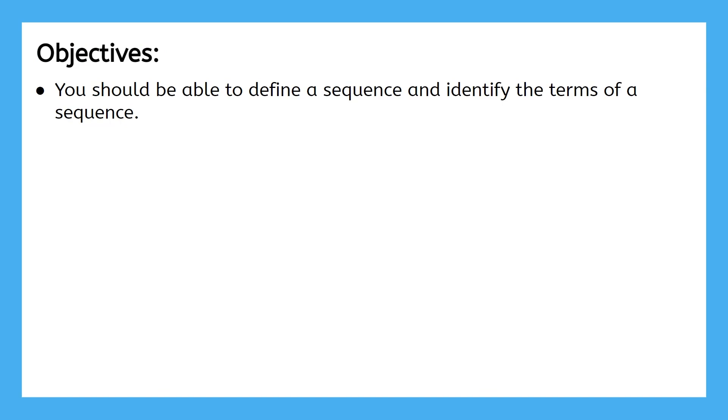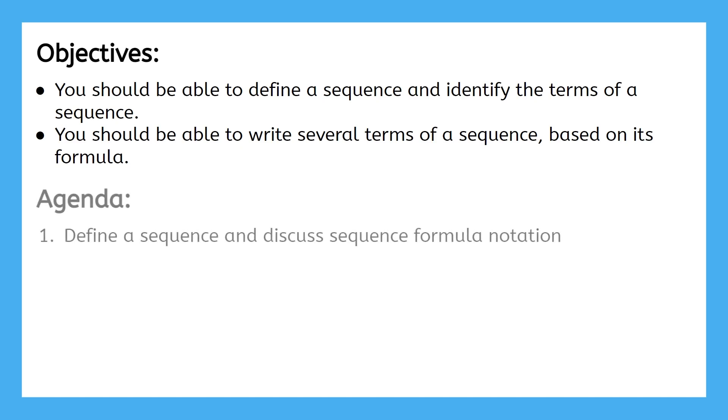By the end of this lesson, you should be able to define a sequence and identify the terms of a sequence. You should also be able to write several terms of a sequence based on its formula. First, we'll define a sequence and discuss sequence formula notation. Then after, we'll do three examples of writing the terms of a sequence.